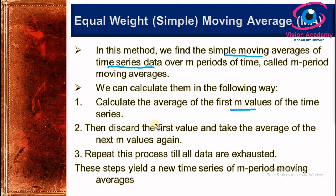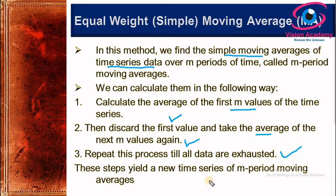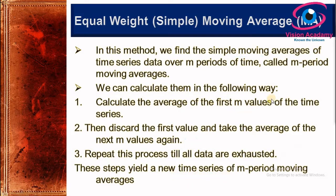After finding the average of the first m values, we discard the first value and take the average of the next m values. If we have six observations, the first group uses observations one, two, three. The next group discards the first value and uses observations two, three, four. This process repeats until all observations are exhausted, producing a new time series of m-period moving averages.